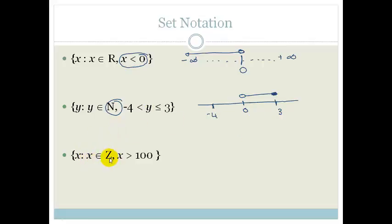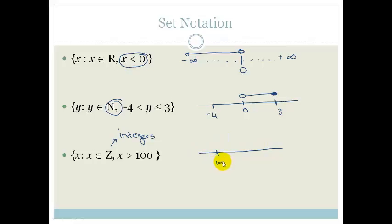We've got x as an element of Z — and what is Z? Z stands for integers, so those are your whole numbers. This is saying that x is an element of integers, but x is going to be greater than 100. So if I had to start my number line at 100, x could be 100, or 101, or 102, or 103, all the way to infinity, but it has to be a whole number.